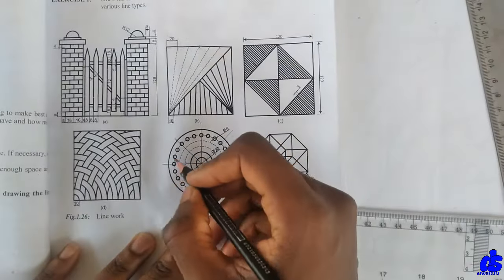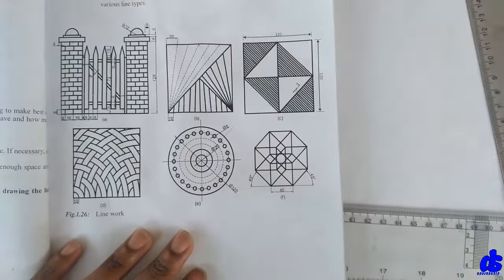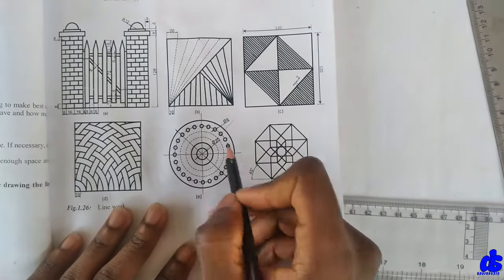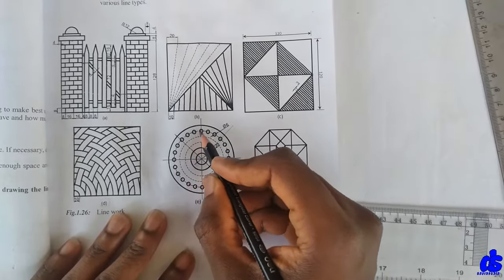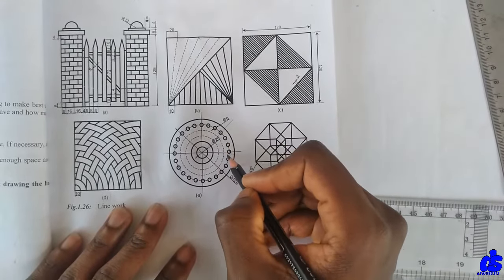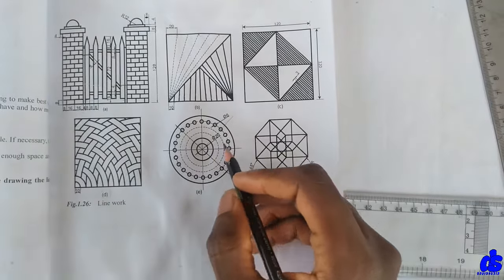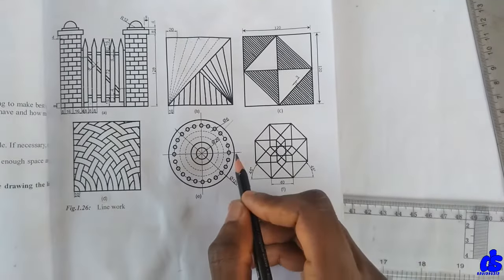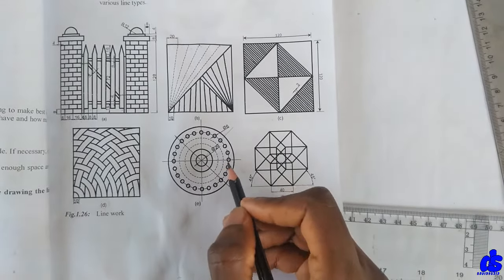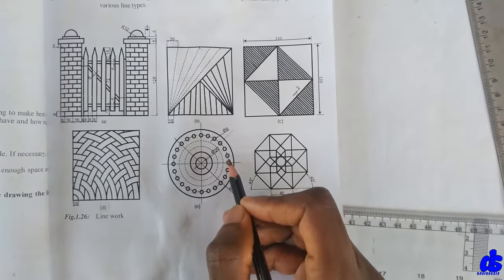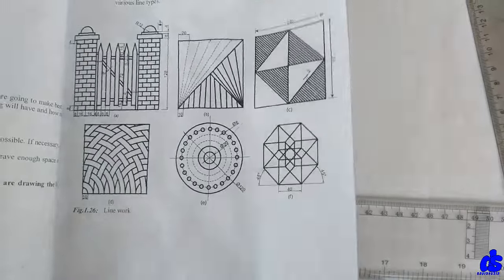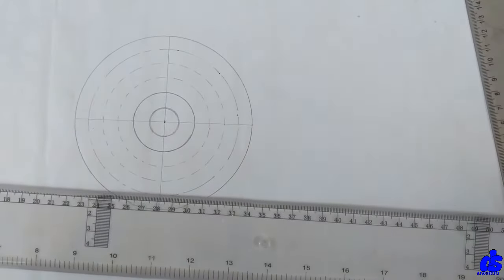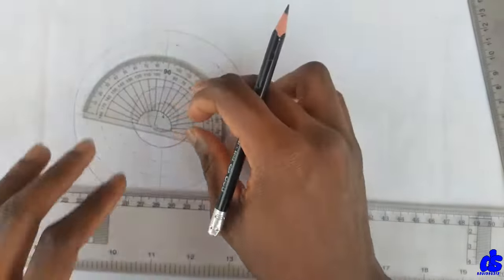All right, so finally with the inner circles in between, let's count one side. So we have one, two, three, four, five, six, seven, eight, nine, ten, eleven, twelve. Twelve circles being shared on an angle of 180, so meaning the angle between each of them is going to be 15 degrees. Right, so let's pick a protractor. We measure out 15 degrees for each.